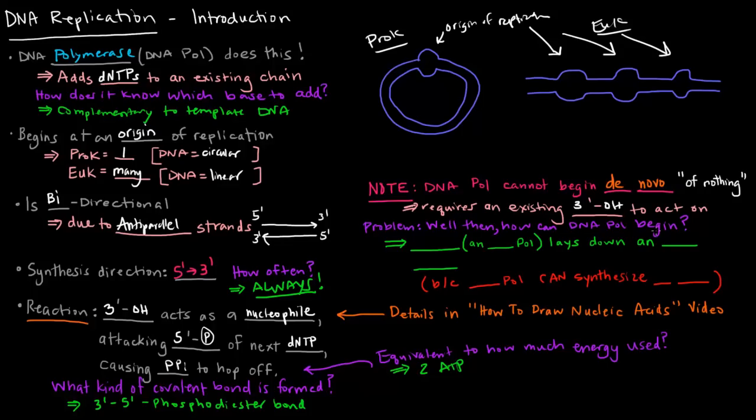This is a problem because if that's the case, then how can DNA polymerase begin if there's no initial... I mean, if it needs a 3' OH group and there isn't already DNA, then how can DNA be synthesized at all? Well, the answer to that question lies with this enzyme here, primase.